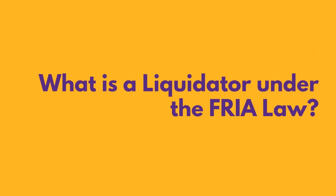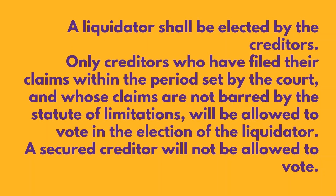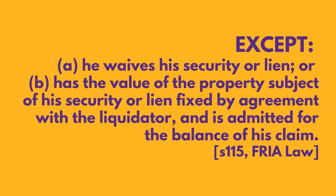What is a liquidator under the FRIA Law? A liquidator shall be elected by the creditors. Only creditors who have filed their claims within the period set by the court and whose claims are not barred by the statute of limitations will be allowed to vote in the election of the liquidator. A secured creditor will not be allowed to vote except: first, when he waives his security or lien; or second, when he has the value of the property subject of his security or lien fixed by agreement with the liquidator and is admitted for the balance of his claim.